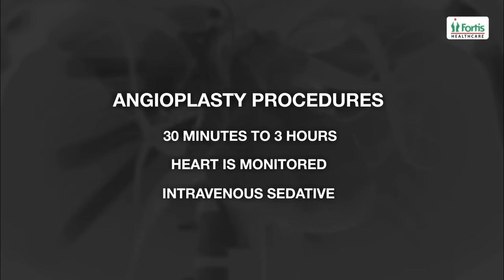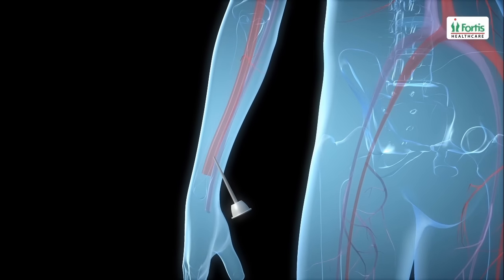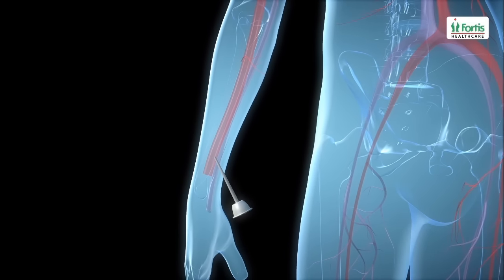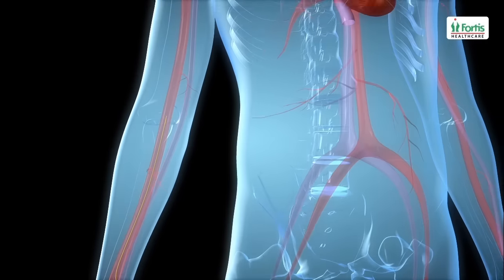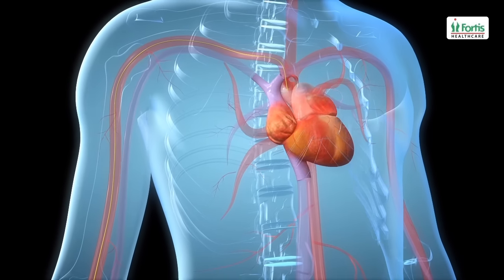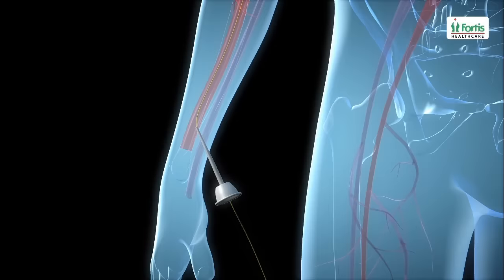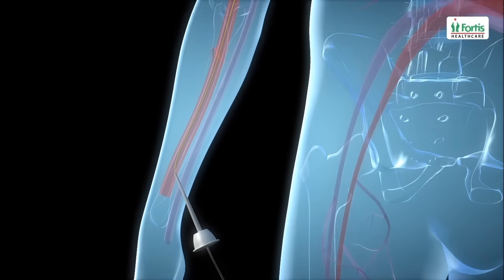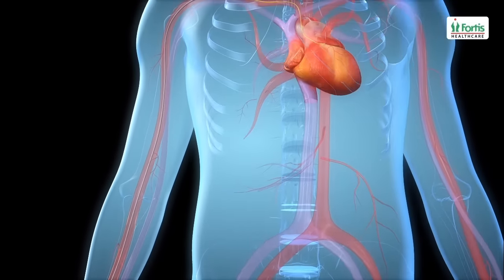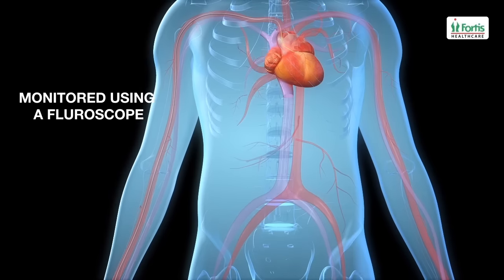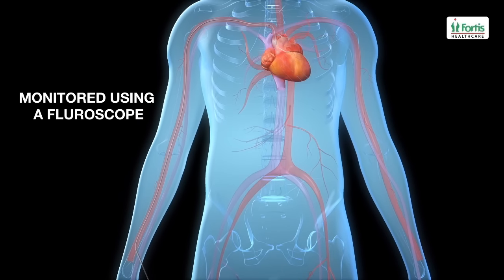To relax the body, a needle is inserted through the wrist into the radial artery. A guide wire is then passed through the needle and guided through the arterial system up to the heart. A flexible catheter is slipped over the wire and threaded up to the heart, monitored using a continuous X-ray imaging device called a fluoroscope.